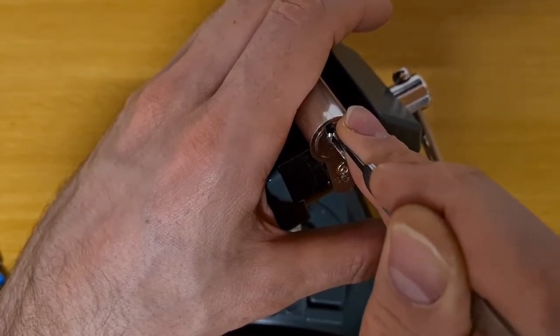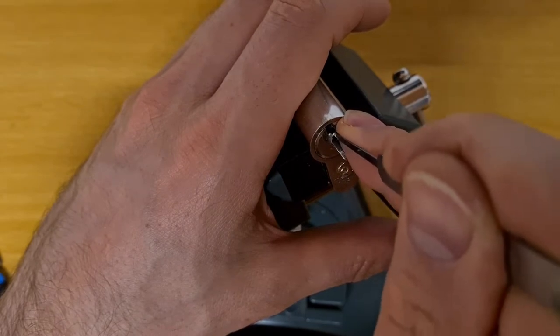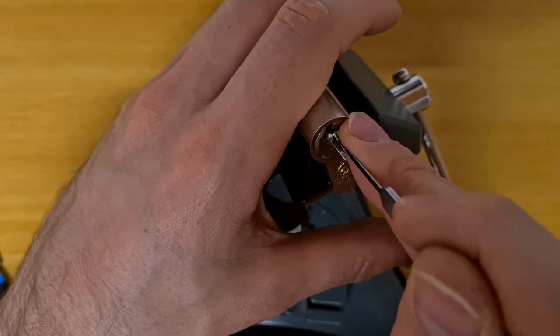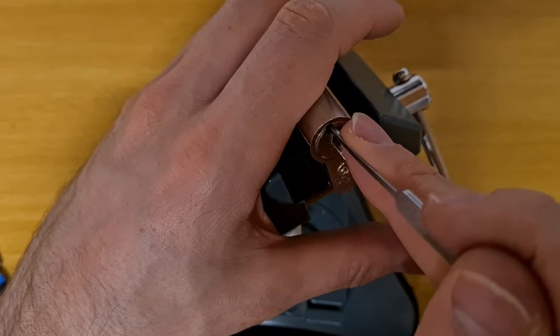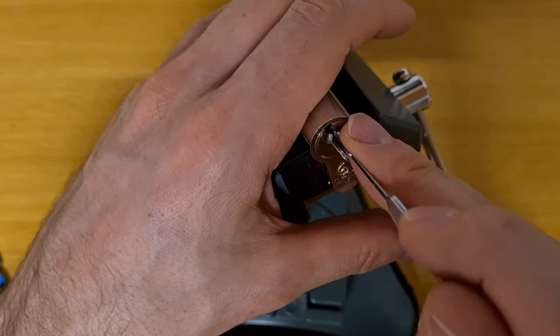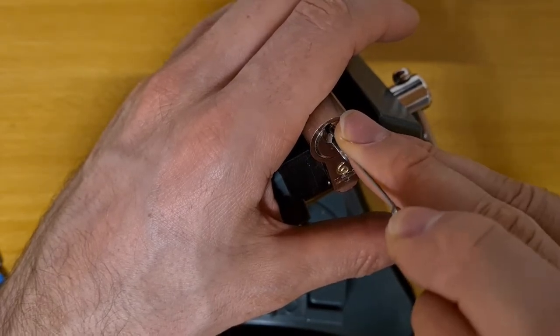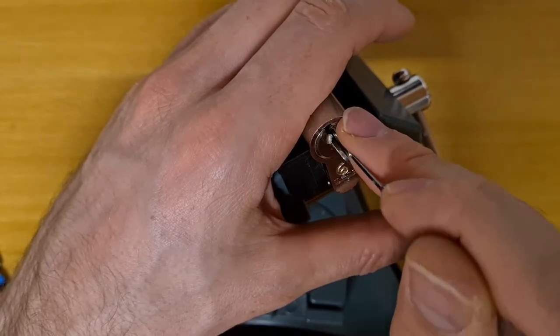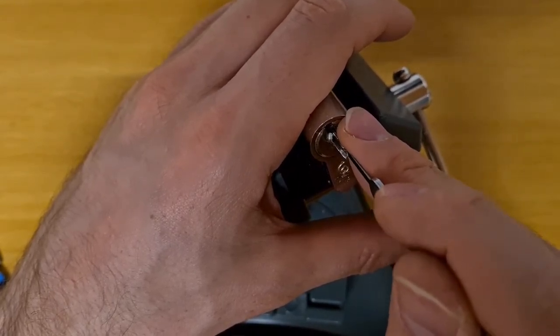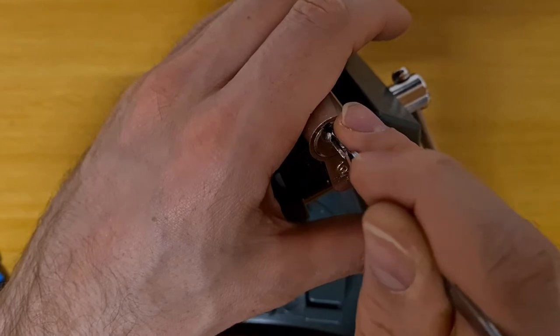I think I might have lost the false set. Maybe some pins are further down than they were previously, or maybe something was overset. Number one seems to be binding. Click and it's down. Pin two feels good, three feels good, and now pin four. Click there.